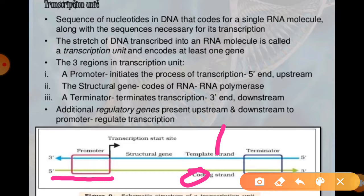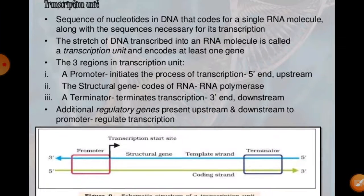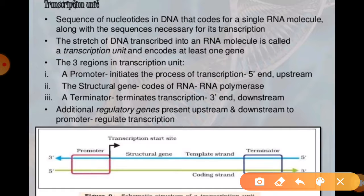The promoter is located towards the 5' end upstream. In the DNA sequences, the promoter is always found at the 5' end upstream. The terminator is always located at the 3' prime end, that is always downstream. It is the DNA sequence that provides the binding site for RNA polymerase, and the presence of the promoter defines the template and the coding strand.